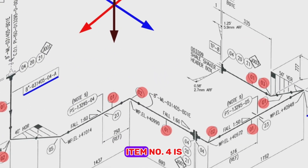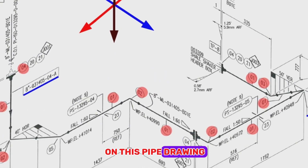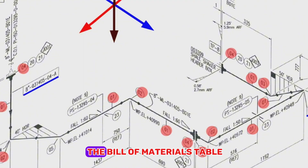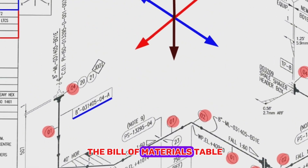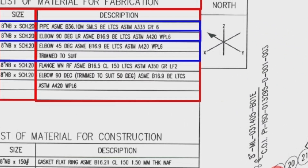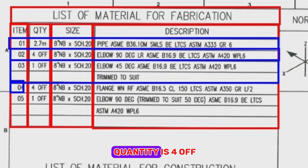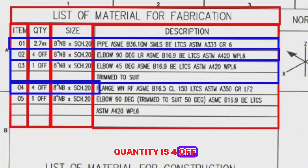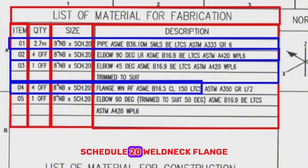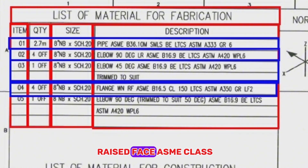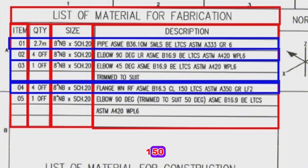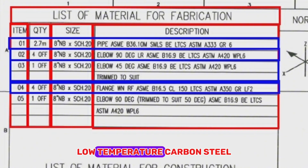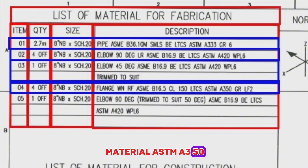Item number 4 is shown in four places on this pipe drawing. Looking at the Bill of Materials table: Item number 4, the quantity is 1 off, size 8 inches, schedule 20, weld neck flange, raised-face ASME, class 150, low-temperature carbon steel material, ASTM A350.